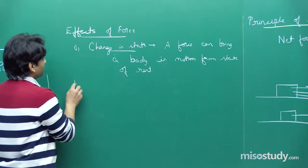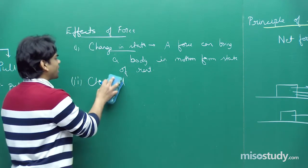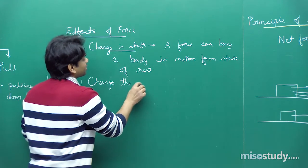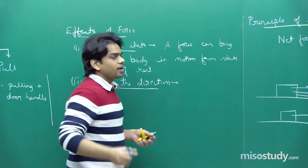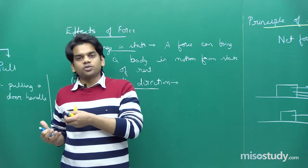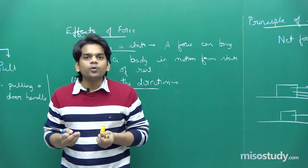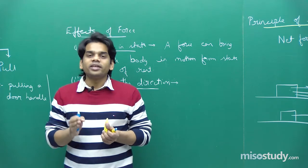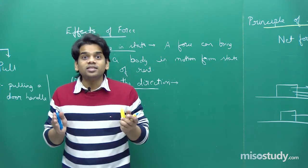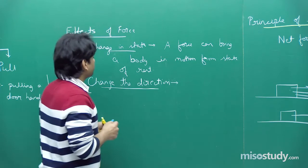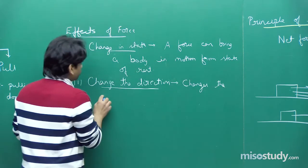The second effect of force: it can change the direction of motion. For example, a bowler bowls a cricket ball along a parabolic path to the batsman. When the batsman hits the ball, he applies a force that changes the ball's direction. Similarly, when you kick a football to the left, right, or at an angle, you are changing the direction of the ball by applying a force.